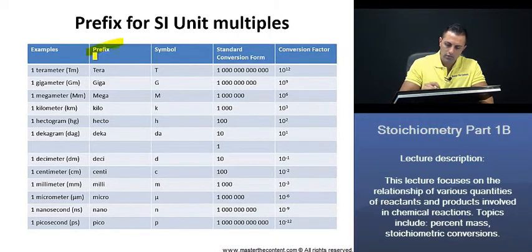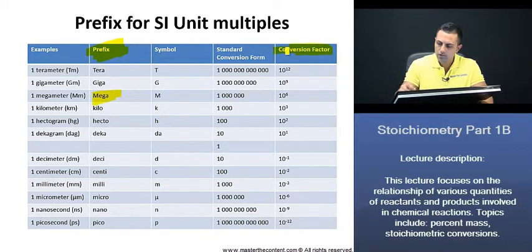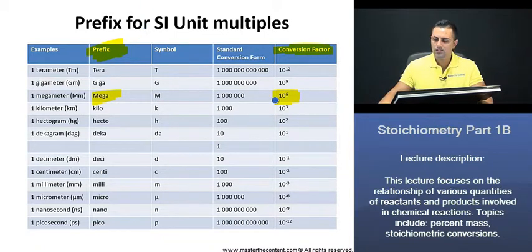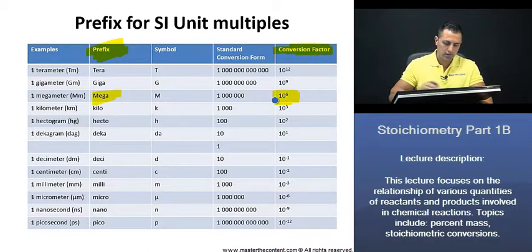And if we see here, prefix mega gives us a conversion factor of 10 to the power of 6. And what that's telling us is that 1 megagram is equivalent to 10 to the power of 6 grams. Great.